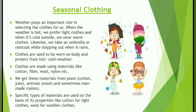Clothes are made using materials like cotton, fiber, wool, nylon, etc. We get these materials from plants such as cotton and jute, from animals such as wool, and sometimes from man-made materials like nylon. Specific types of materials are used on the basis of their properties — like cotton for light clothes and wool for woollen clothes.